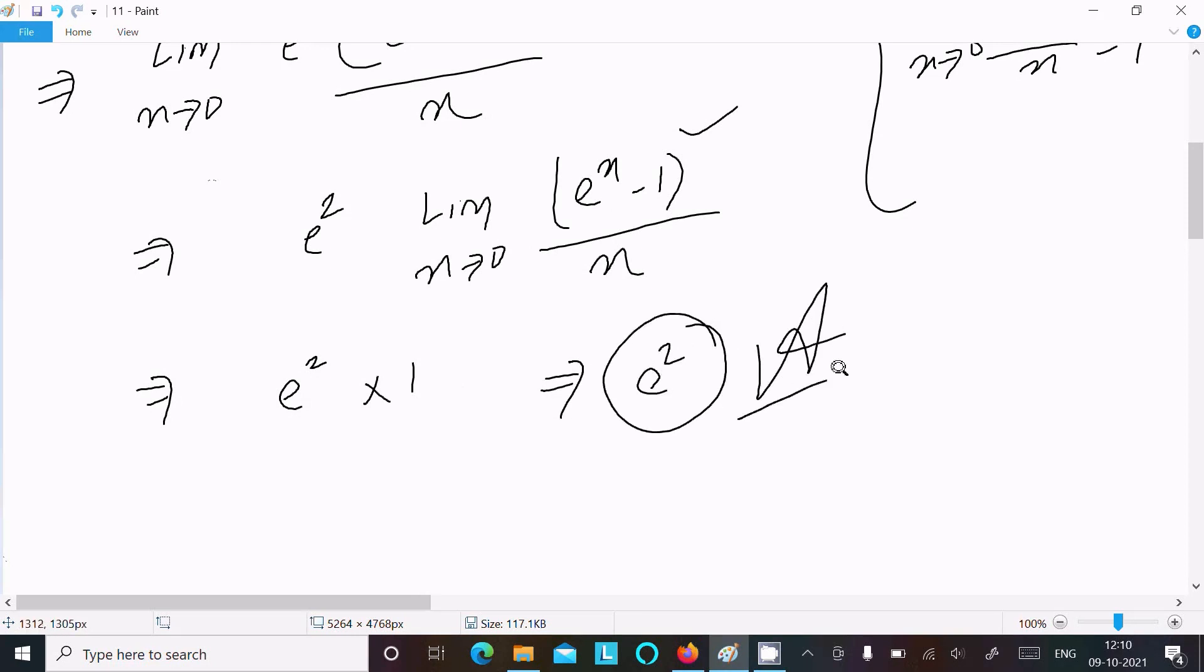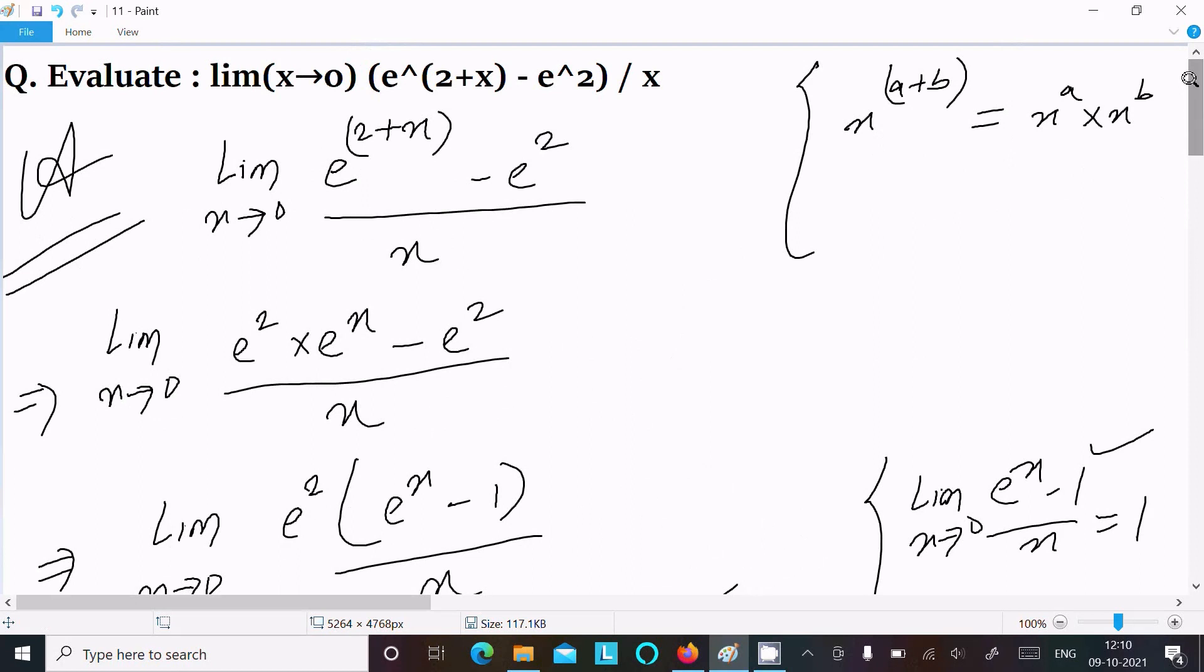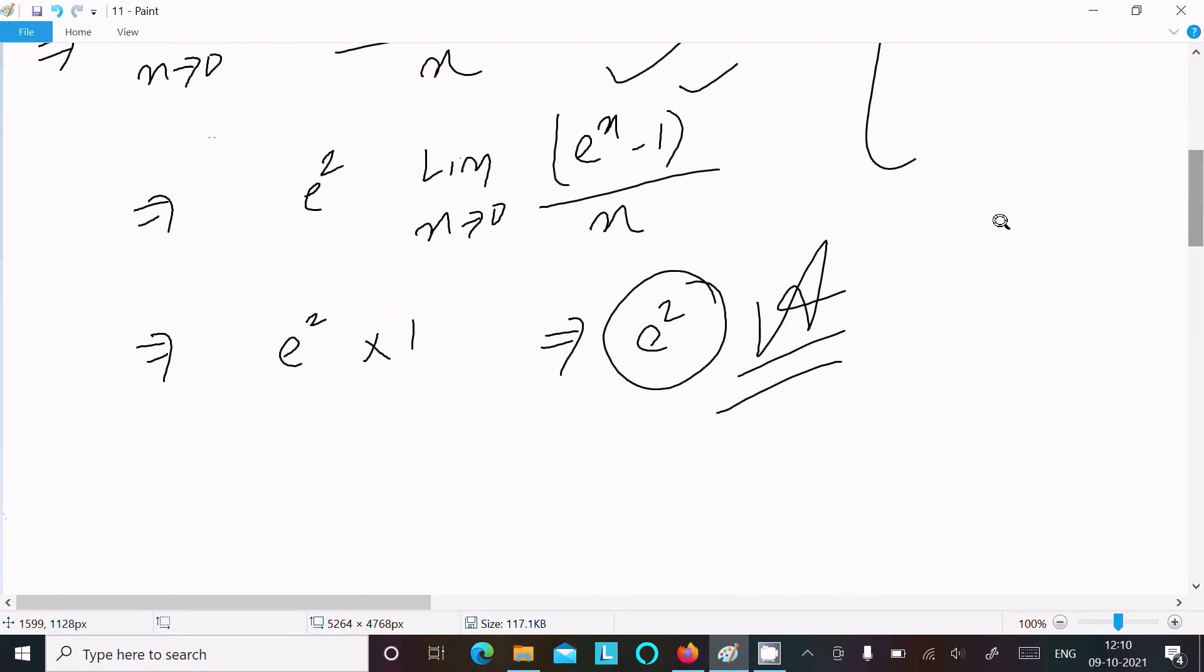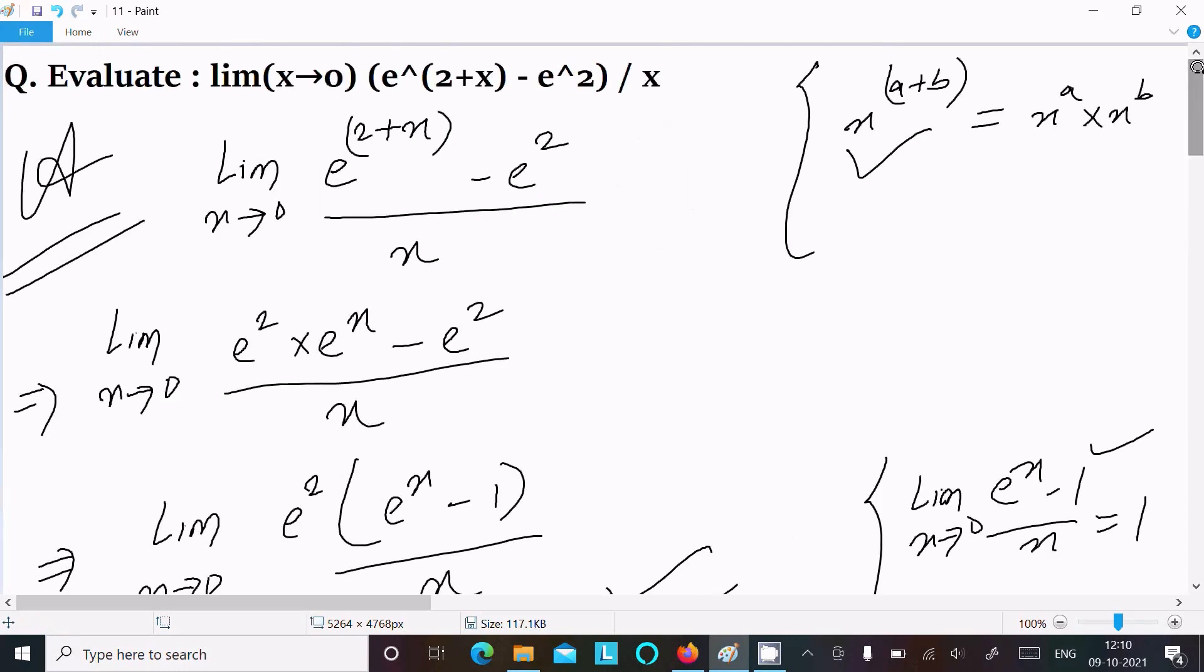So this is the answer to this limit question. Let me repeat: this problem is based on the concept that x^(a+b) equals x^a times x^b. Use that, then take the common factor and use the standard limit formula to get your answer. This is how we evaluate this limit question. Thanks for watching, see you next week.